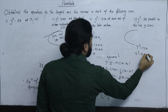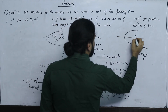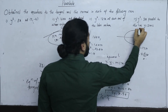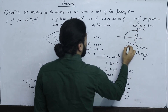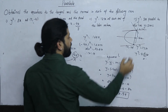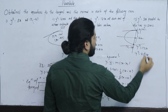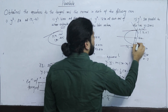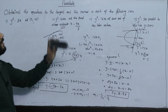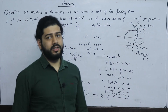Y squared equals 4 into 3x. This is the third case. The point is the end of the latus rectum. The latus rectum — the end of the latus rectum is this distance. This is the end of the latus rectum. Your tangent and your normal are found. The question is solved.